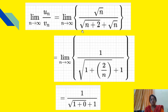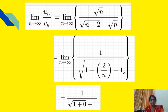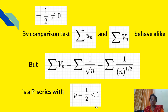Therefore limit as n tends to infinity of √n / (√(n+2) + √n). Dividing numerator and denominator by √n, we get limit of 1 / (√(1 + 2/n) + 1). When n tends to infinity, 2/n tends to 0, giving 1/(√1 + 1) = 1/2, which is not equal to 0. By the comparison test, Σun and Σvn behave alike.